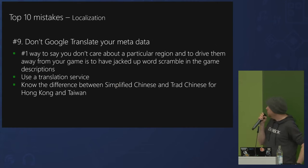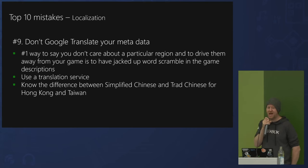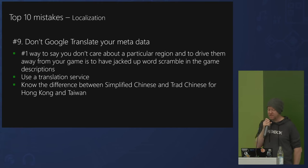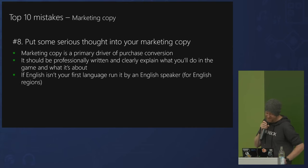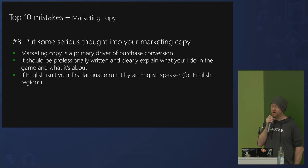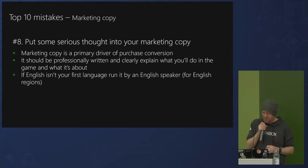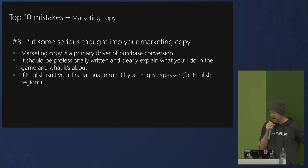Number nine: poor translation of metadata. Don't machine-translate your metadata. Find somebody — a real human — to do it properly, and get your community to check it for you. Number eight: throwaway marketing copy. The copy you use for your game should be professionally written and tell the consumer what kind of game it is. So many developers go into massive detail about the backstory but don't actually explain what the game experience is going to be like. It should describe what's special about your game, not just the setting.